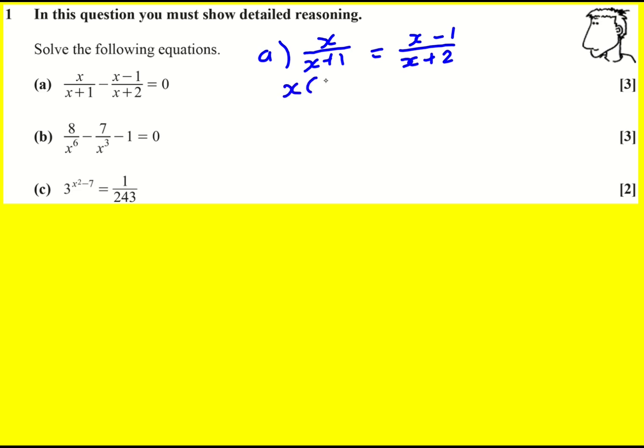It ends up with x times x plus 2 equals x minus 1 times x plus 1. Very quickly before I carry on, what I meant at the start as an alternative would be to basically times through by x plus 2 and x minus 1 which immediately gives you the same thing.